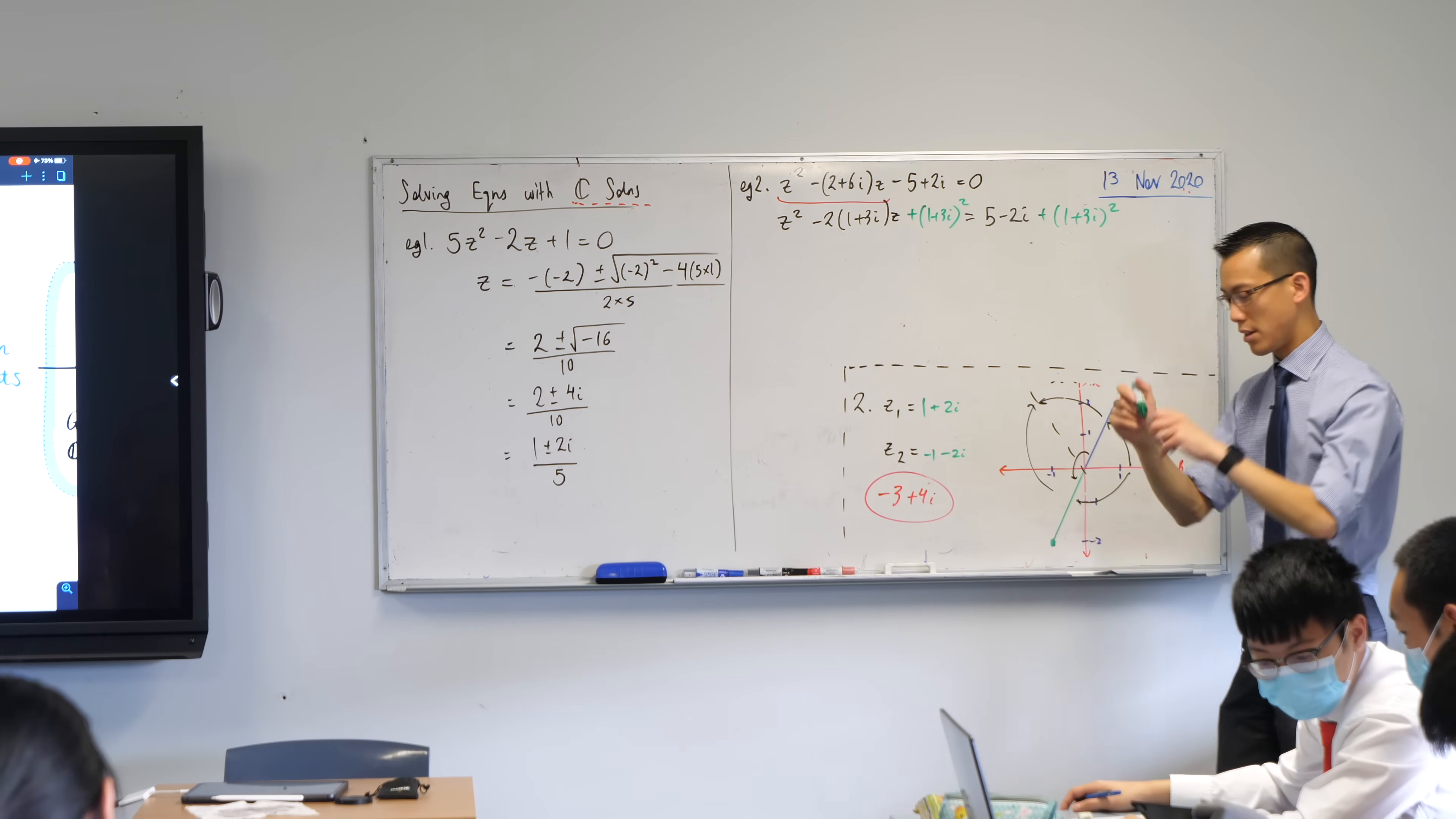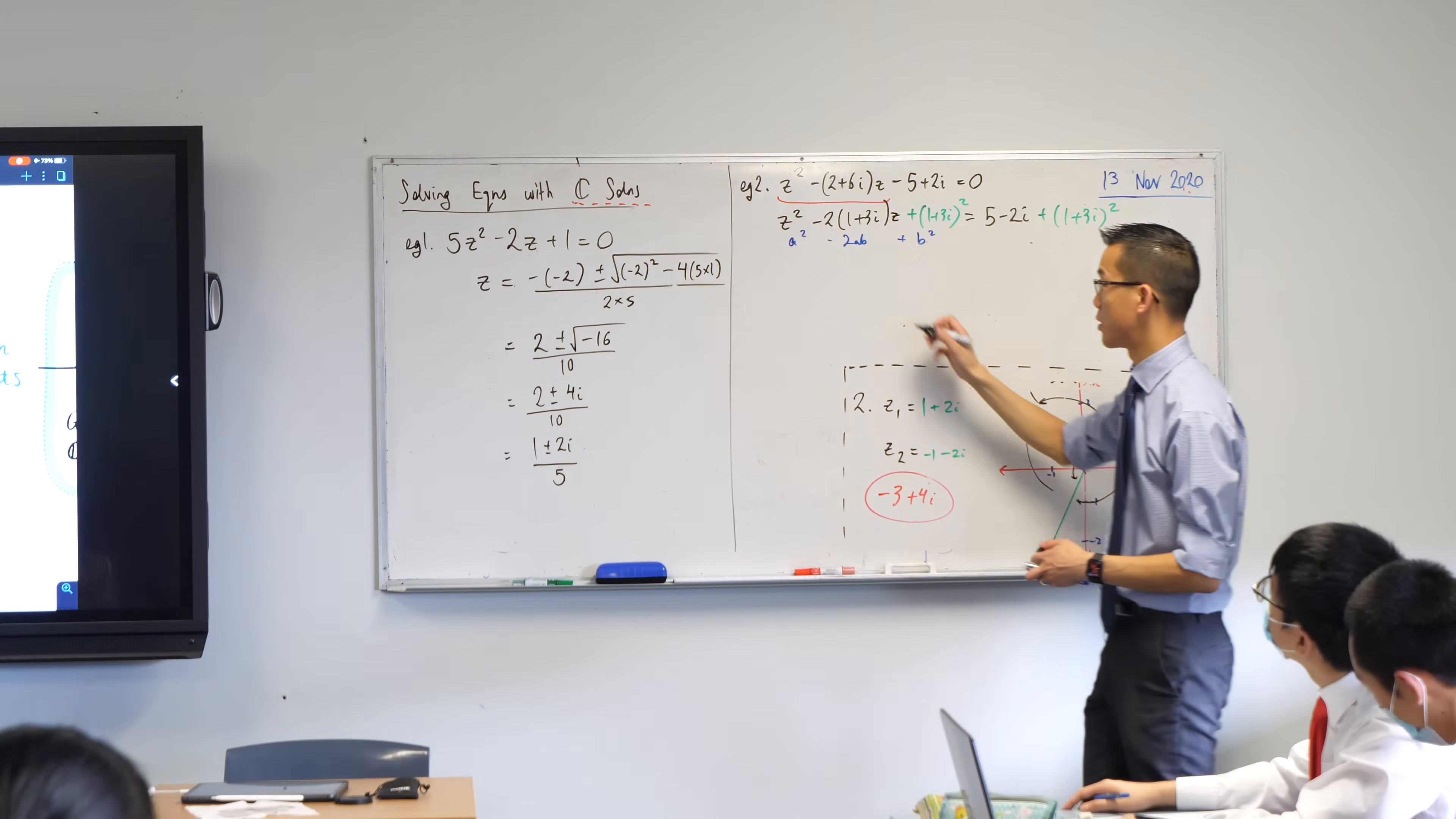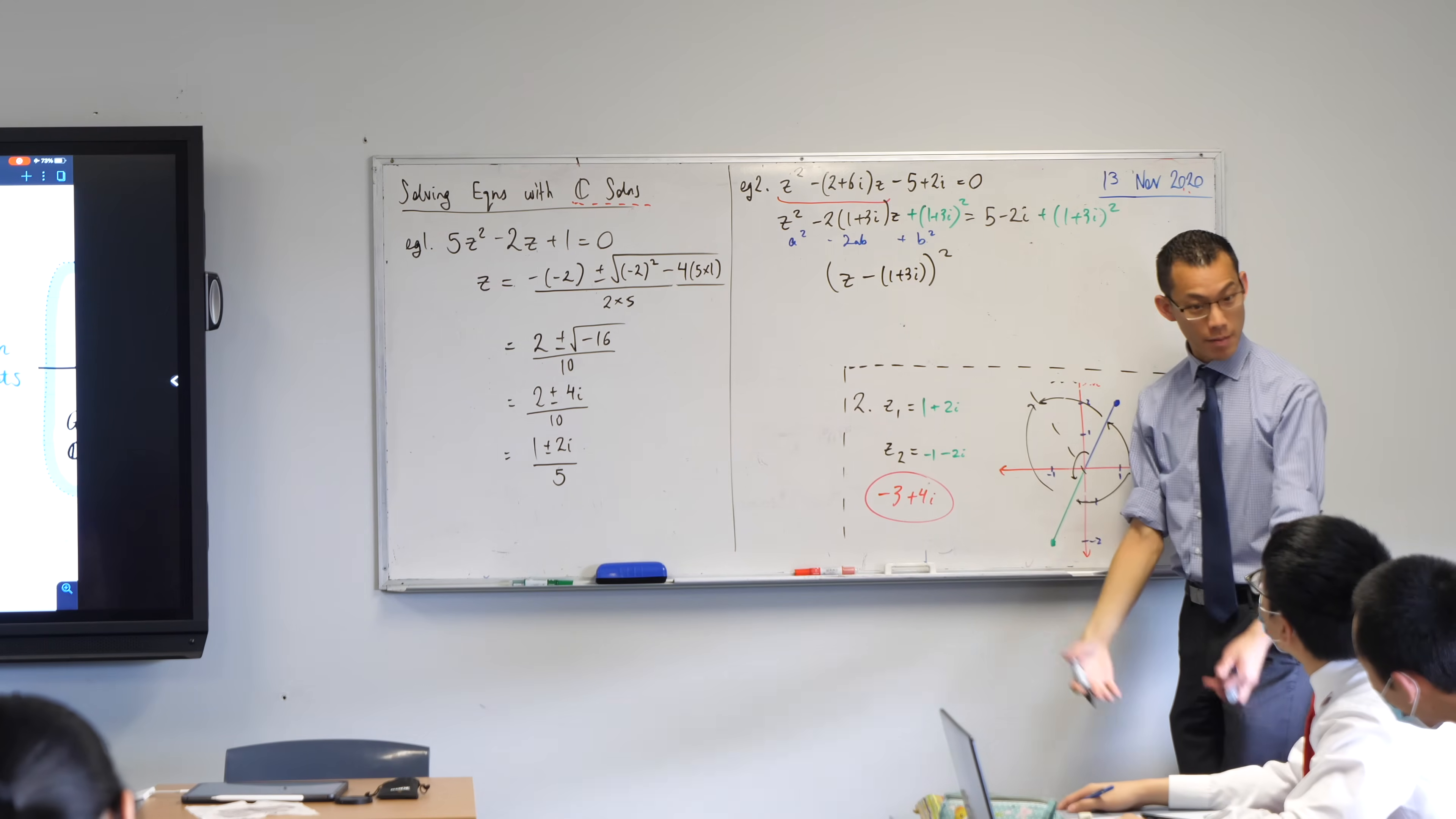So I've actually completed the square now, but the whole point in doing that is so that I could factorize the left-hand side. This is now currently in the form, I might write it underneath actually in this color, this is in the form a² - 2ab + b². Do you see that? So I can write it as (a - b)² which is exactly what I'm going to do now. So my a is just z. What's my b? Have a look at how I factorize it. It's just going to be 1 + 3i. Do you agree with that? 1 + 3i. And that is all squared. There's my factorization.